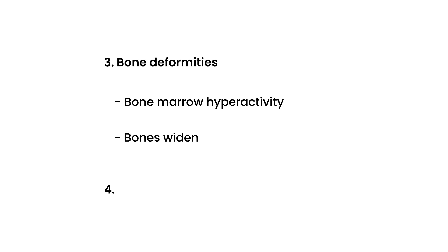The fourth and final symptom is slow growth rates. The bony deformities contribute to that, and so does the anemia — the patient with thalassemia is chronically anemic, which can contribute to slow growth rates. Instead of just memorizing these signs and symptoms, it's important to understand them, and I think that will help you remember them on a test.